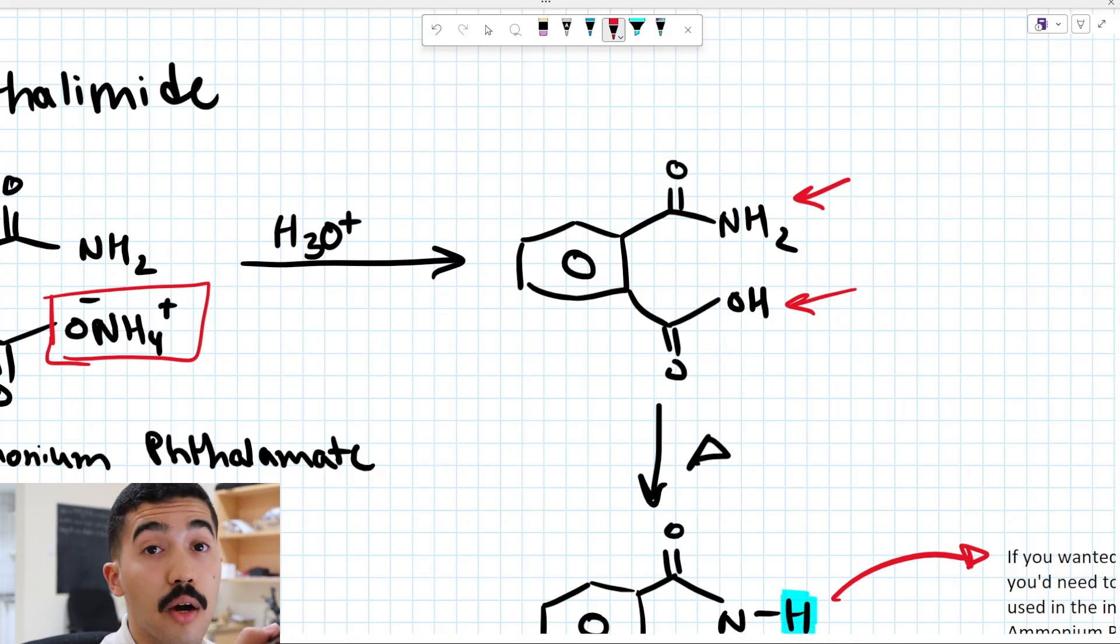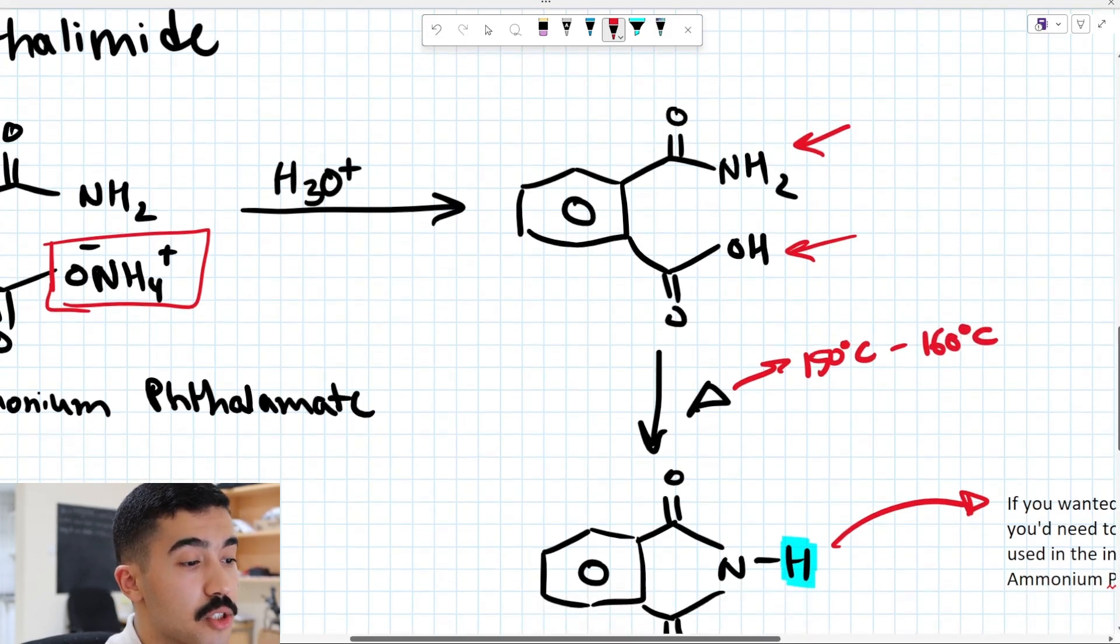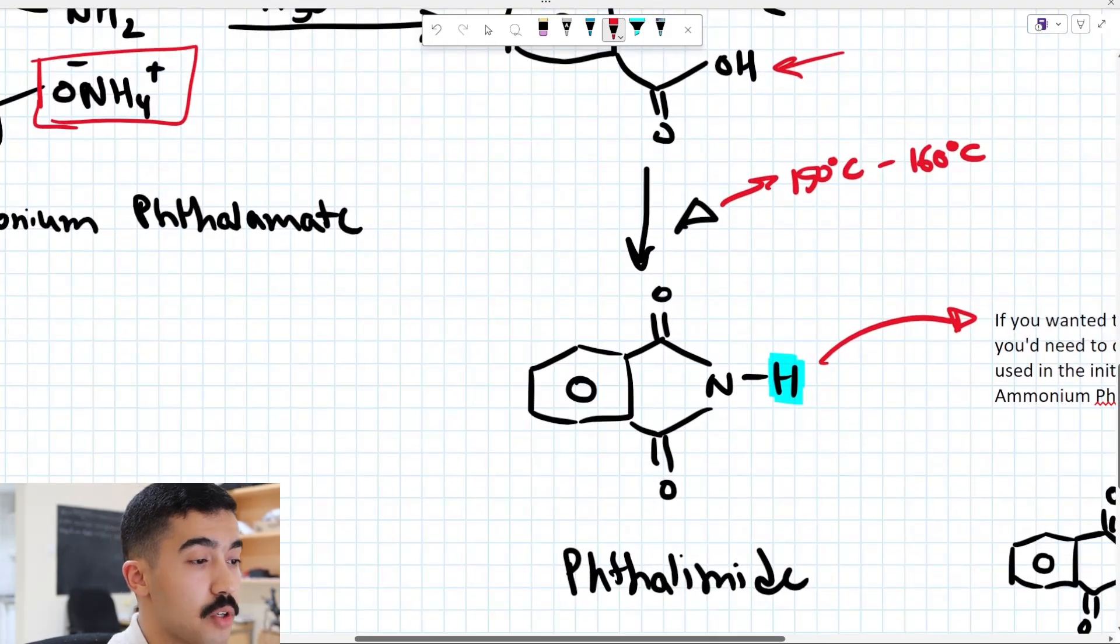Now to form our amide functional group, we're just going to heat this. Now typically, when we say heat, we mean somewhere in the realm of 150 degrees Celsius to 160 degrees Celsius. And essentially you form your amide functional group.